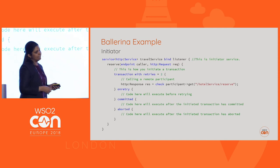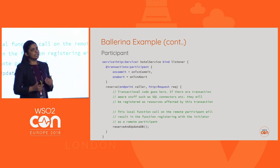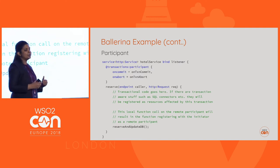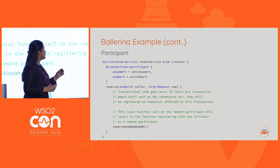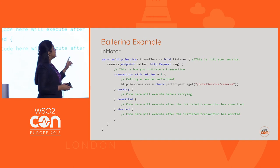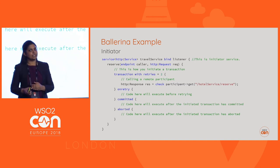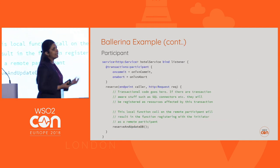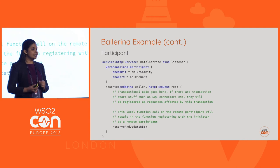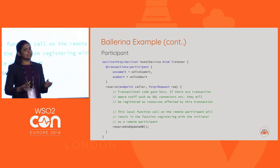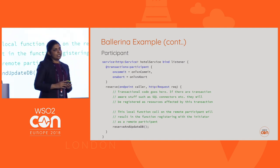On the participant side, the service and resource syntax is the same, but a special annotation indicates that incoming requests should trigger registration with the coordinator. The transaction context is injected as HTTP headers in the outgoing request from the initiator; the participant receives them as HTTP headers, analyzes them, and registers with the coordinator. We also have on-commit and on-abort function pointers that execute after a successful commit or on failure. That is the Ballerina reference implementation of this specification.